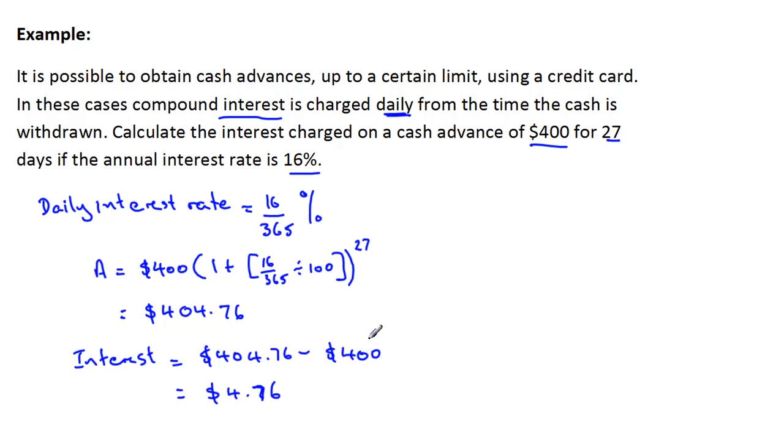So what we need to look at for these ones is, number one, how often is the interest paid? And make sure that we modify two things: the interest rate per period, and secondly, the number of time periods that occur.